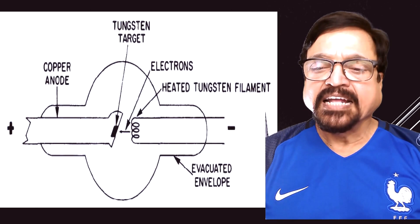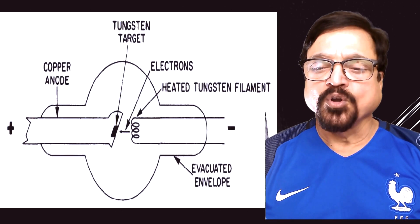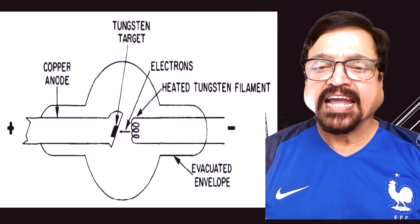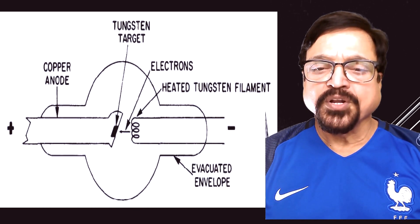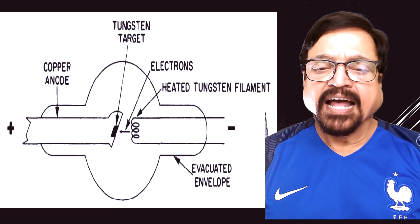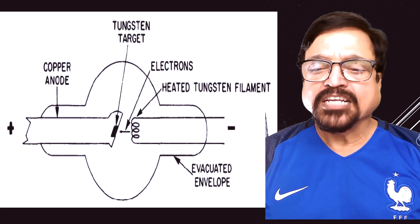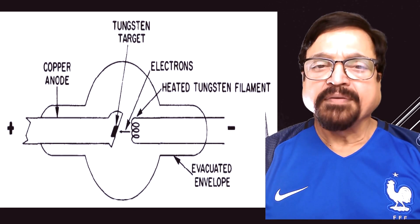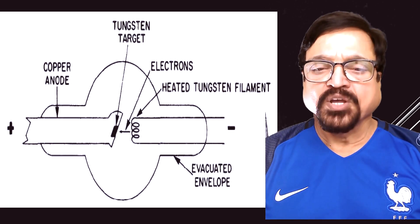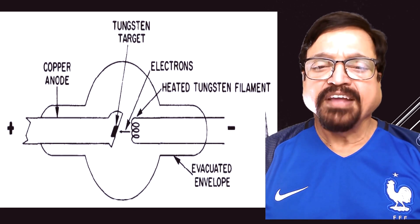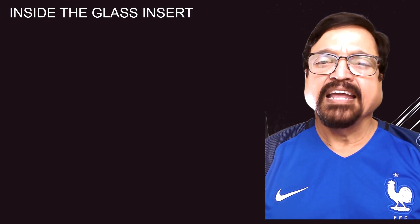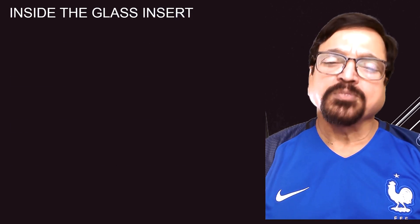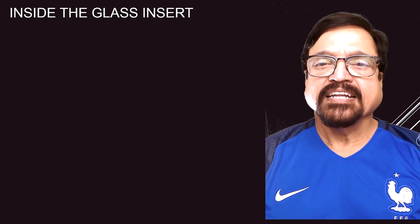This is the stationary anode tube. You can see the anode is small, consisting of copper on the outside and a small focal spot of tungsten. There are no moving parts here. We have a fixed anode which is of copper, and in that the focal track or focal spot is made of tungsten.